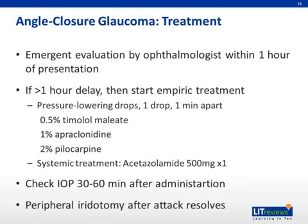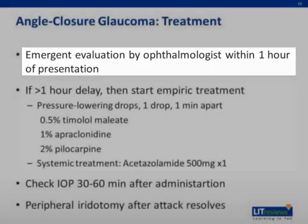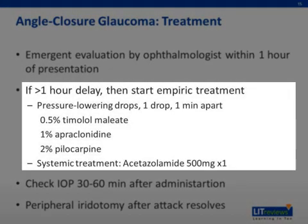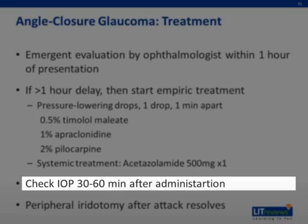In angle-closure glaucoma, outcomes depend on the rapidity of detection and initiation of treatment. Damage to the optic nerve can occur within hours of an acute angle closure attack, and an ophthalmologist should evaluate the patient within one hour of presentation. If there is likely more than a one-hour delay, the patient should be initiated on empiric treatment: pressure-lowering drops including timolol maleate, apraclonidine, and pilocarpine should be administered along with systemic acetazolamide. Eye pressure should be checked 30 to 60 minutes after administration of these medications.